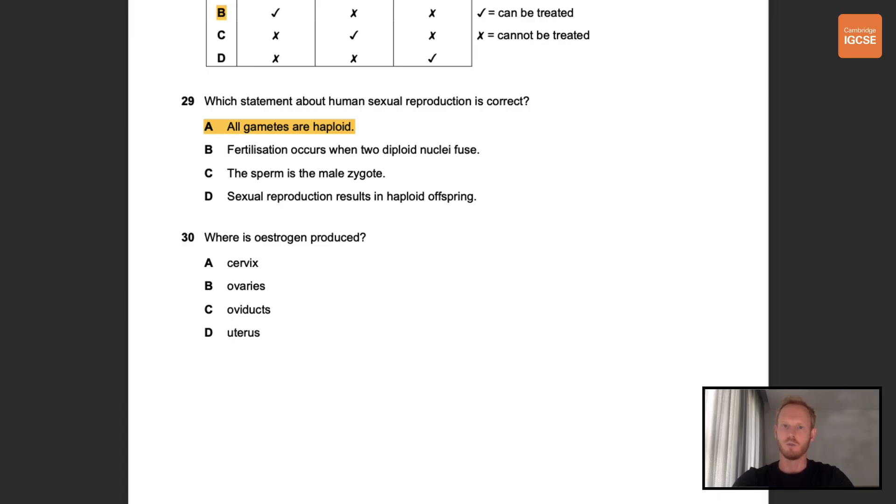Number 30. Where is estrogen produced? The female sex hormone estrogen is produced in the ovaries. The primary male sex hormone testosterone is produced in the testes.